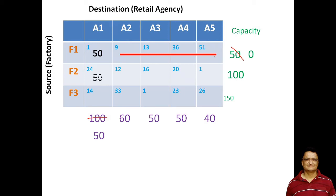Moving to the next step, out of the remaining matrix the northwest corner cell is now F2→A1. The maximum quantity we can allocate is 50, because the remaining requirement for A1 is now 50. That requirement is now fulfilled. The capacity of F2 was 100, but we have supplied 50, so the remaining quantity is 50. The total requirement of A1 has been fulfilled, so I mark it as red.